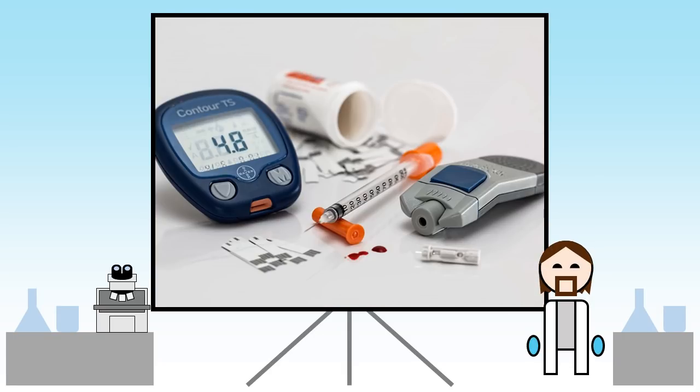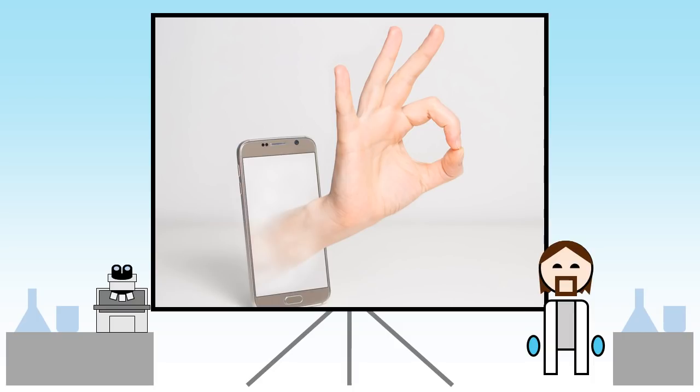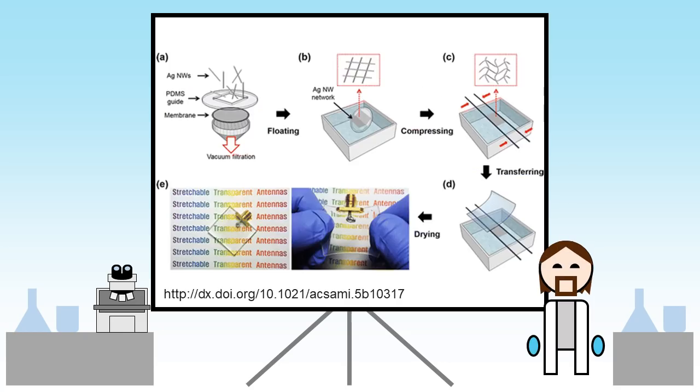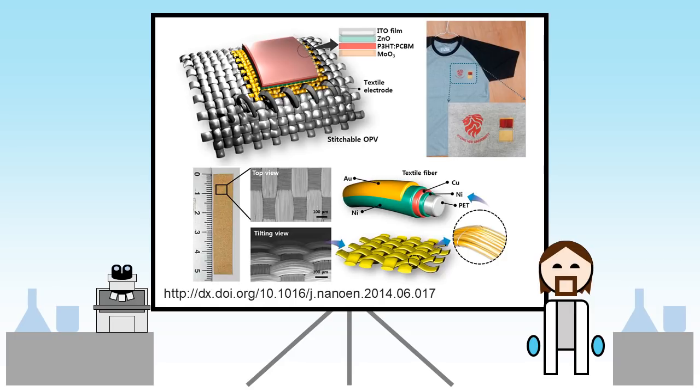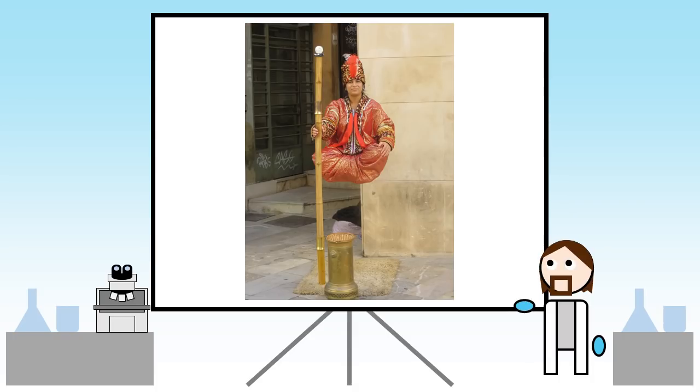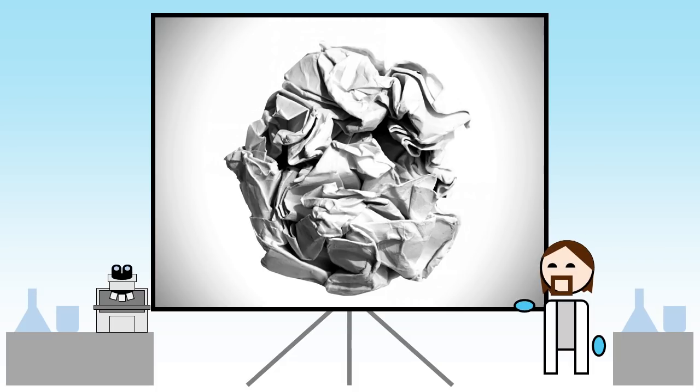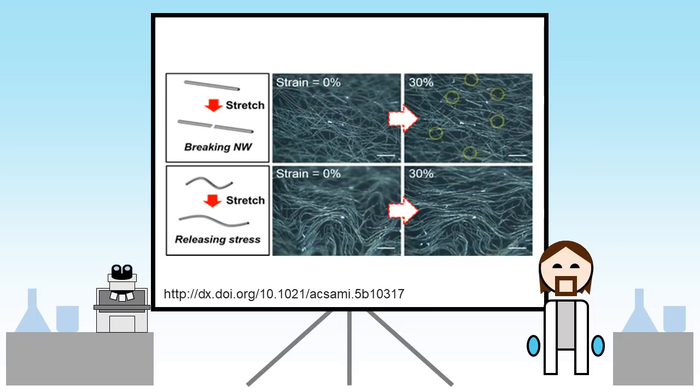Another article describes how nanowires can be made into stretchy antennas for wireless communication, a complete necessity when you are trying to develop technologies that can integrate into clothing, for example. The authors used a clever trick here. They crumpled up the nanowires before putting them onto their stretchy surface.